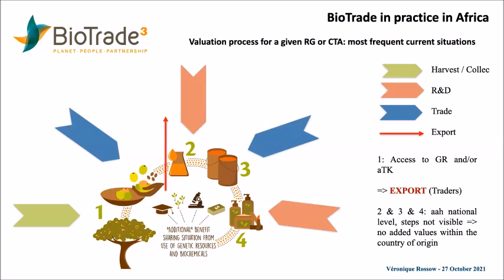On one side, the genetic resource, like the fruit, and you have a drawer showing your hand containing some fruits. This hand illustrates the ATK, meaning the Associated Traditional Knowledge, that is also shared to build new value chains.